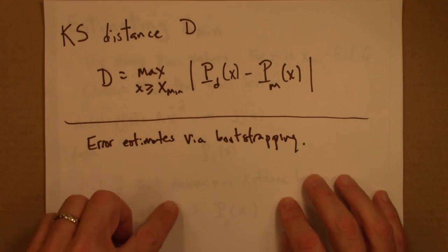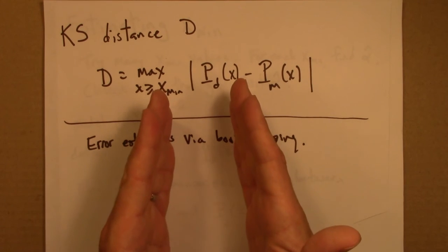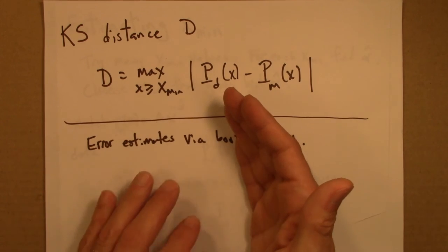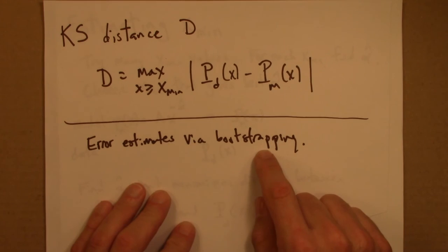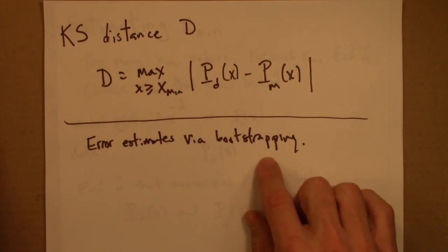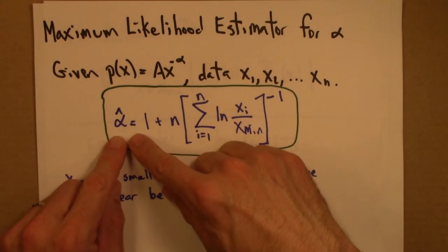So you can make a histogram of those xmin values, and figure out what the 95% confidence intervals are. So if you needed error estimates, that would be the way to do it via bootstrapping.